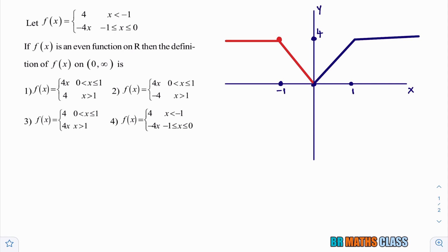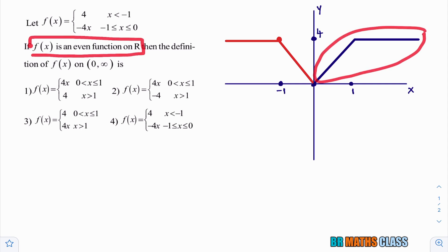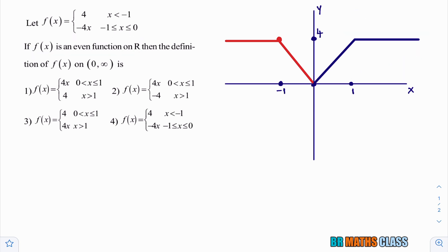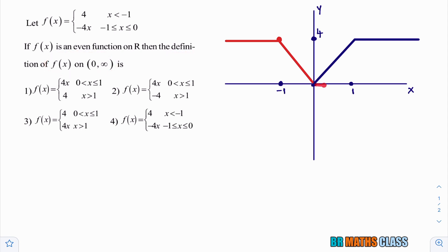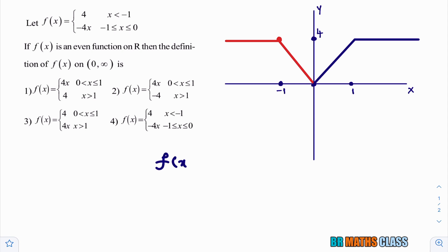The symmetrical graph about the y-axis looks like this. As they mentioned that f of x is an even function on R, that's why we can write it like this. In the question, they are asking us to define f of x on the open interval zero to infinity. You can observe from zero to one: that graph is y equals 4x, so f of x equals 4x when zero is less than x less than or equal to one.